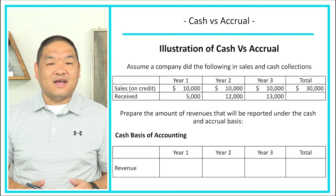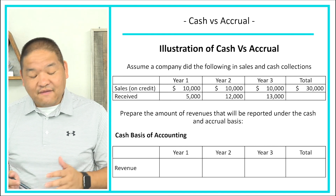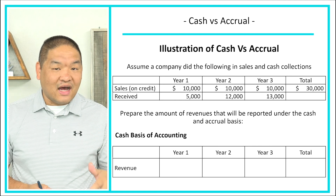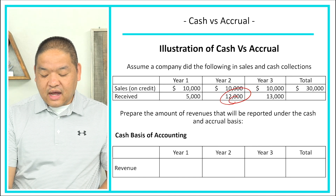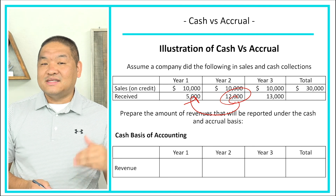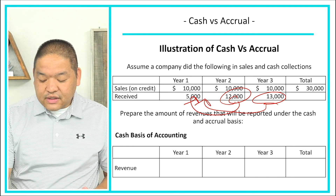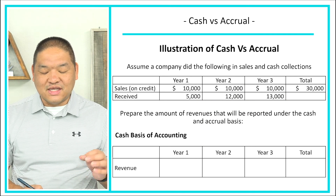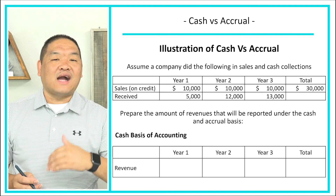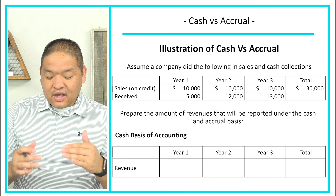Here's an illustration to make sure you understand cash versus accrual. Assume a company had the following sales and cash collections: in Year 1, $10,000 in credit sales but only $5,000 collected; in Year 2, $10,000 in sales but $12,000 collected; in Year 3, $10,000 in sales but $13,000 collected. We need to prepare the revenue amounts reported under both the cash and accrual basis.